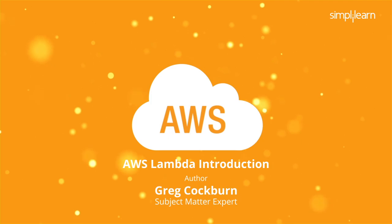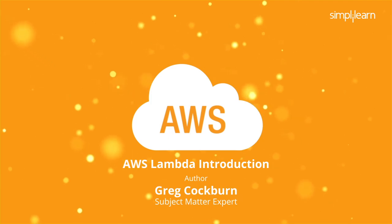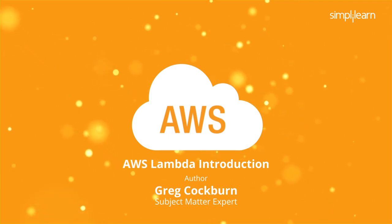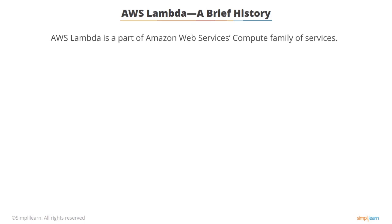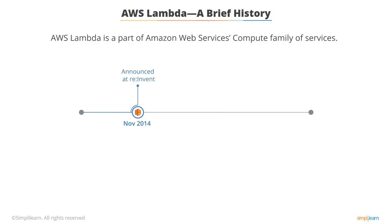An Introduction to Lambda. AWS Lambda is part of Amazon Web Services' Compute family of services. AWS Lambda was announced at re:Invent in November 2014 and became generally available in April 2015.